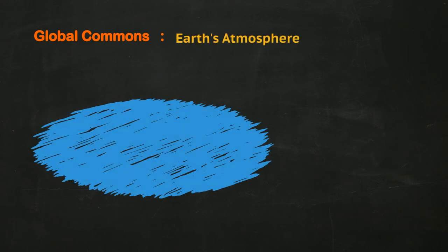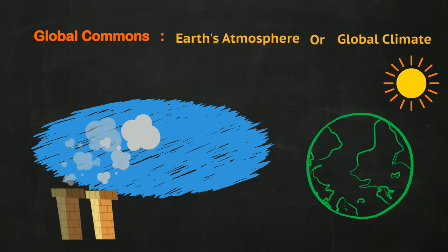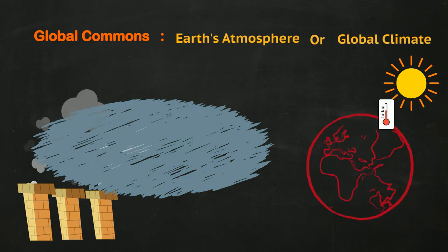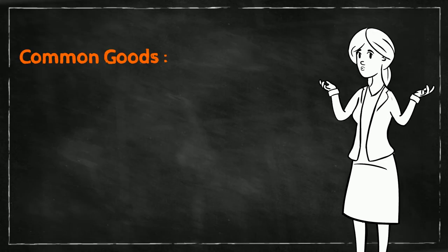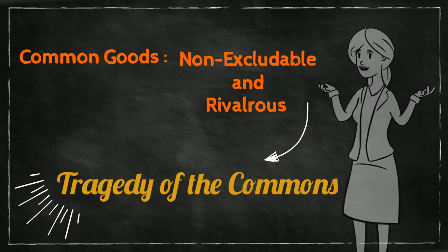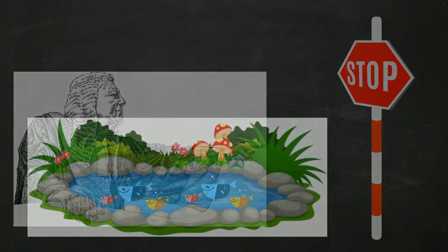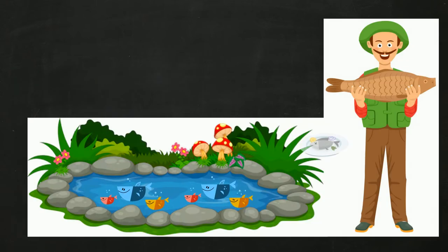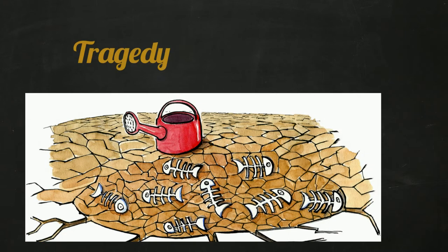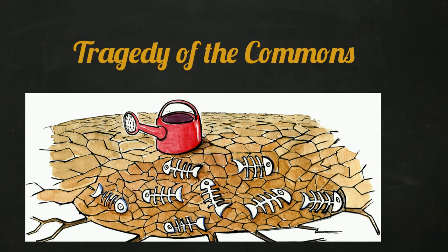Or think of a global commons like the Earth's atmosphere or the global climate, where an increase in pollution from one part of the world can affect the quality of environment for everyone. Since common pool resources are non-excludable and rivalrous, they are prone to a situation called the tragedy of the commons. The tragedy is that, in the absence of any rules and regulations, it is in everyone's best interest to maximize their personal gains instead of working together to sustain the resource for the long-term benefit of everyone.